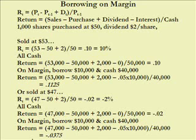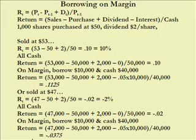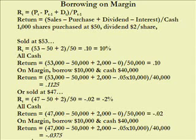current price minus the previous price, plus income and dividends in the case of common shares, divided by the previous price. In words: the sales minus the purchase — and notice that doesn't matter whether we're going long or short — plus the dividend income minus the interest expense, divided by the cash put into the investment.